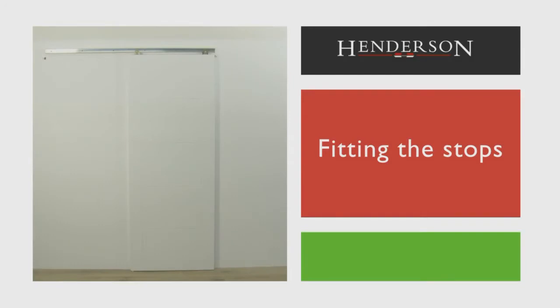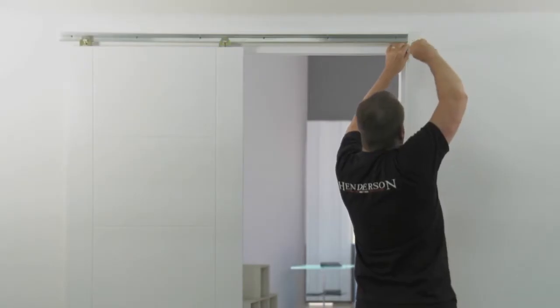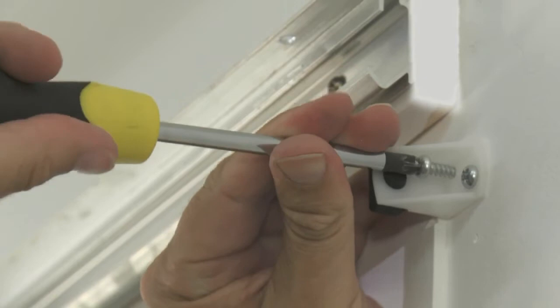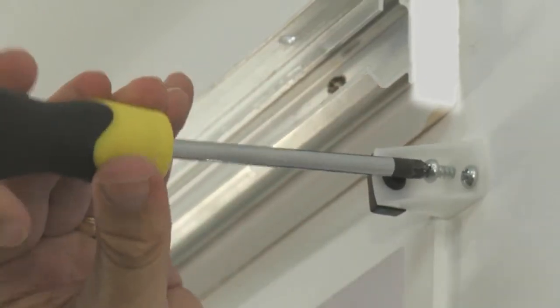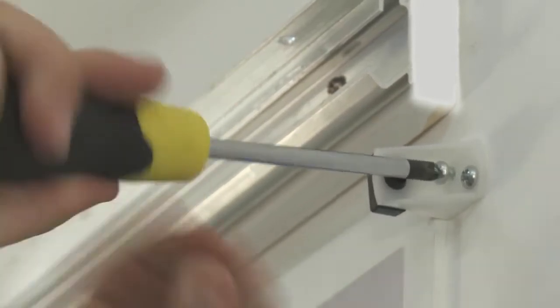Fitting the stops. Now we need to attach the stops so that the door doesn't run out of the track in operation. Locate a suitable position on the wall for the stops and fix them into place.